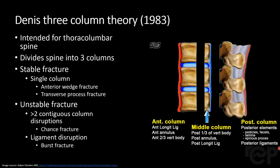There is a landmark paper from 1983 that describes the three-column theory. Originally intended for the thoracic and lumbar spines, its principles can be applied to the cervical spine. This theory divides the spine into three columns — anterior, middle, and posterior — and generally states that fractures involving only a single column tend to be stable, while fractures involving two or more contiguous columns tend to be unstable.